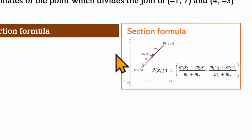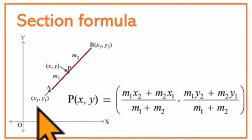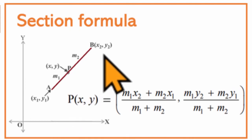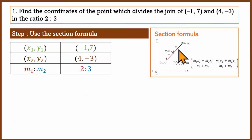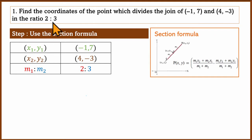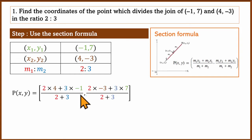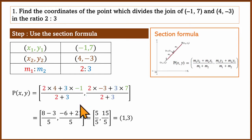We use the section formula with x1, y1 as the first point and x2, y2 as the second point, and m1 to m2 as the ratio 2:3. Substituting into the formula and simplifying gives the answer.